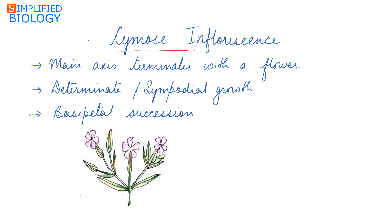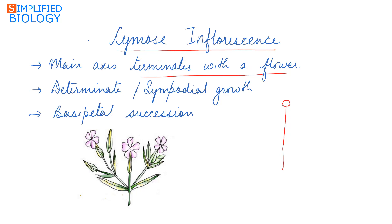In the last video we studied racemose inflorescence, where the main axis never terminates by a flower and flowers develop in acropetal succession. In cymose inflorescence, the main axis always terminates with a flower, due to which its growth becomes restricted.